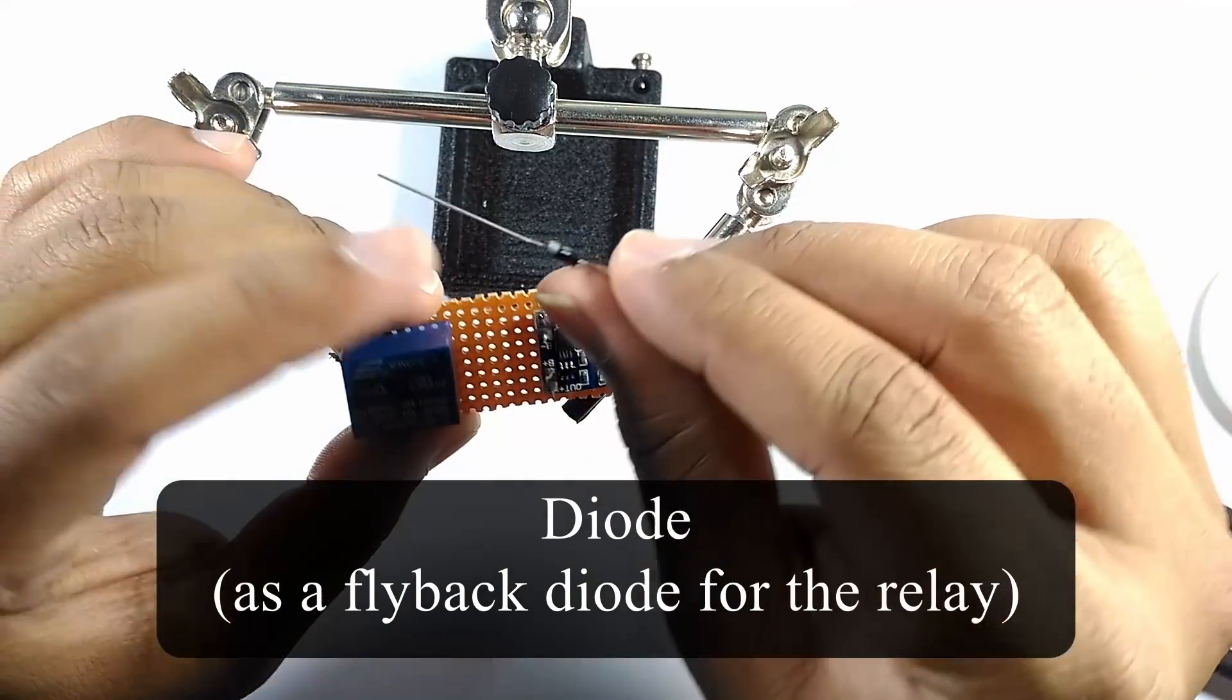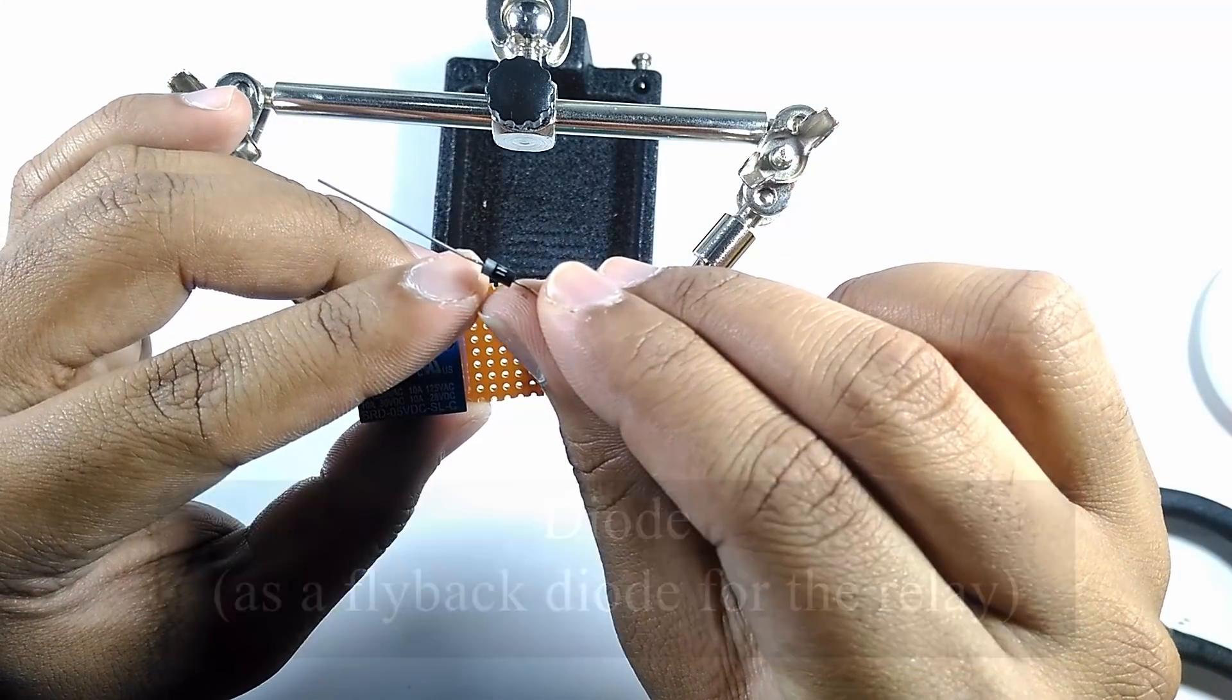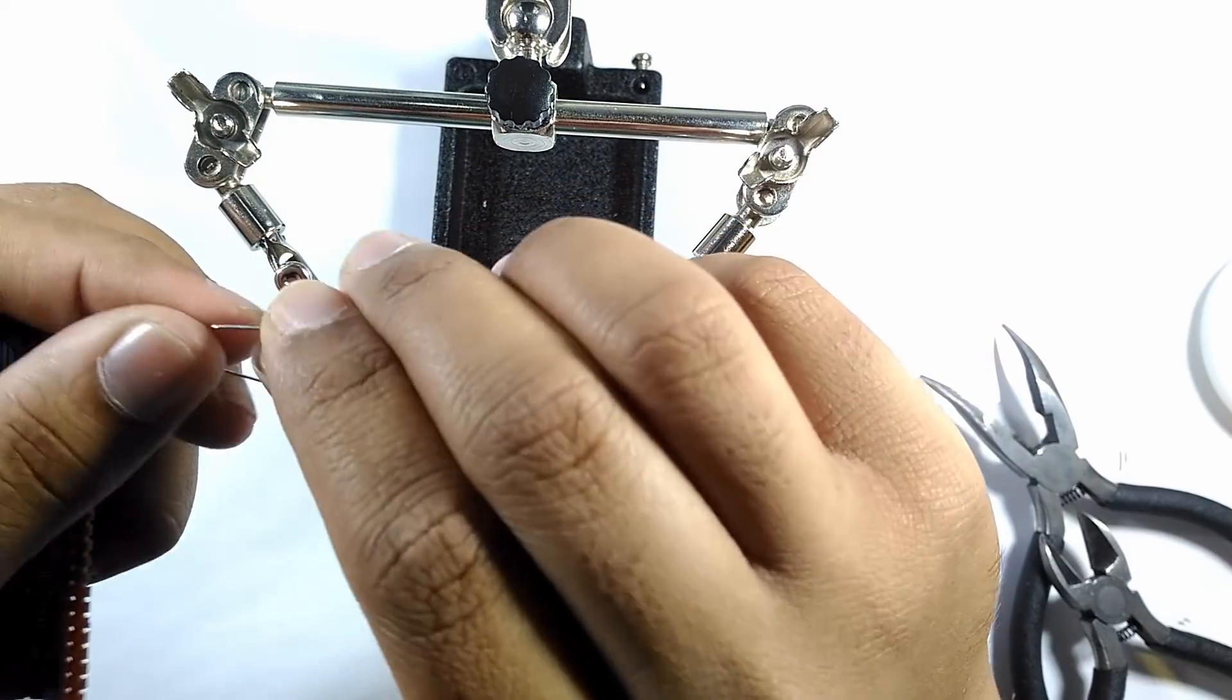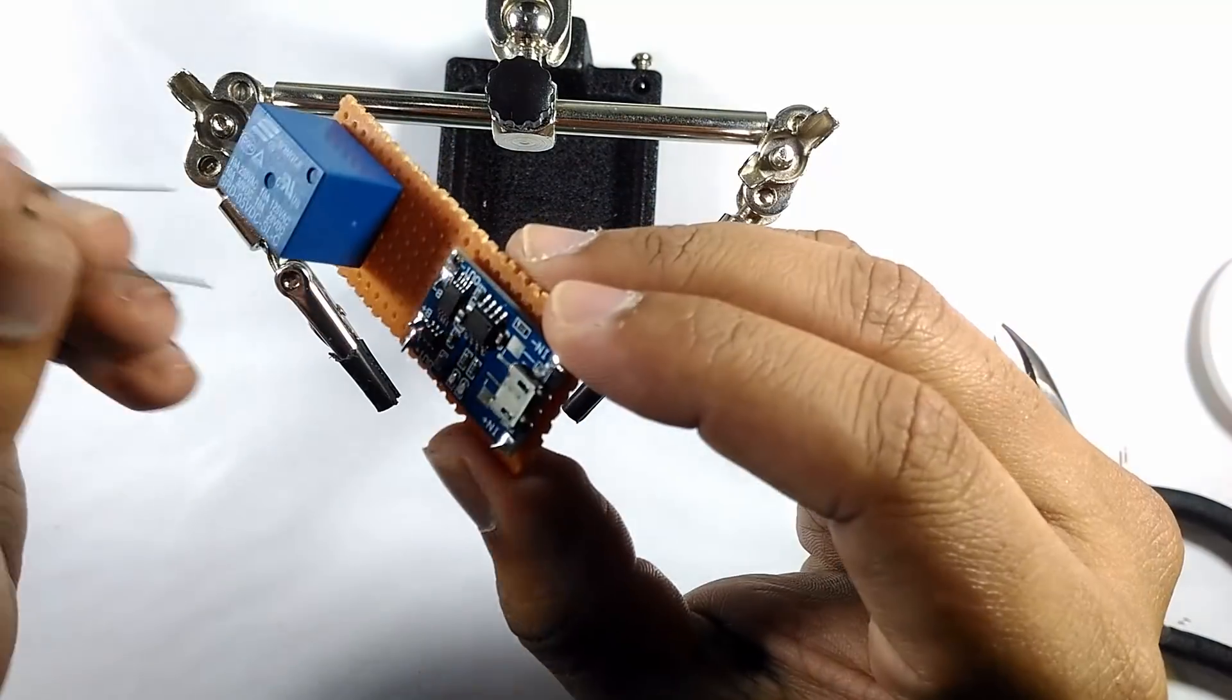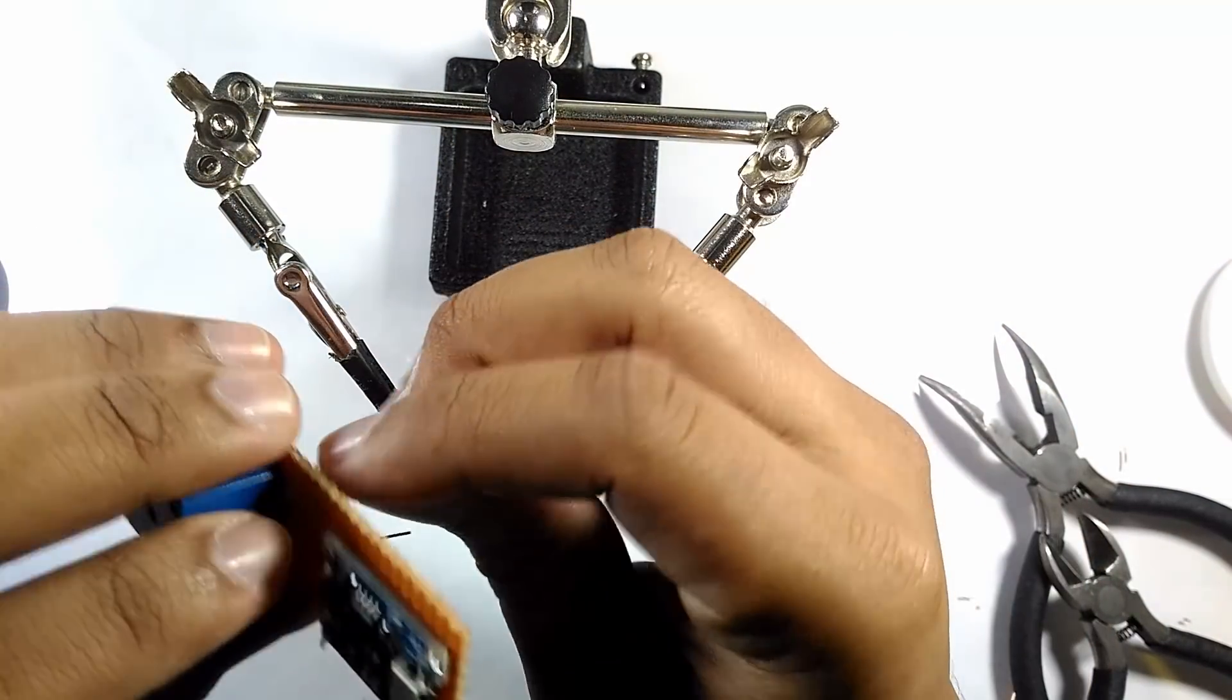I soldered a diode to act as a flyback diode for the relay. A flyback diode is required when you are dealing with coils and one is used here since a relay is mainly a coil.